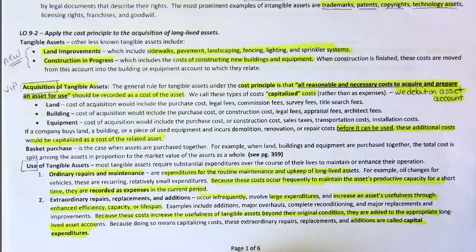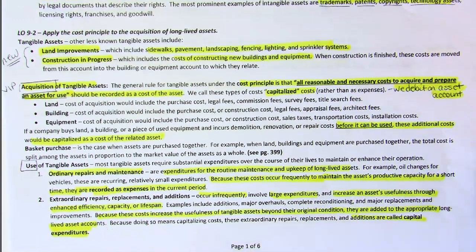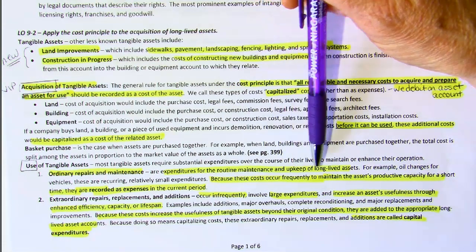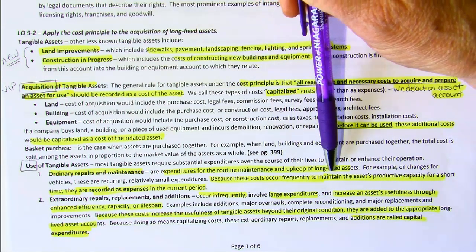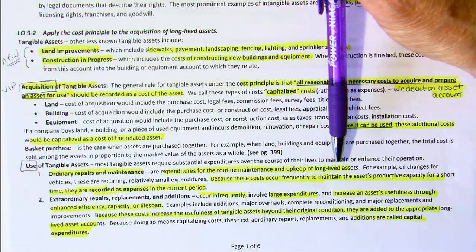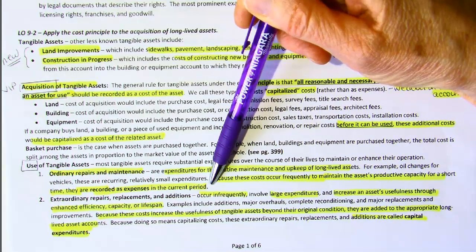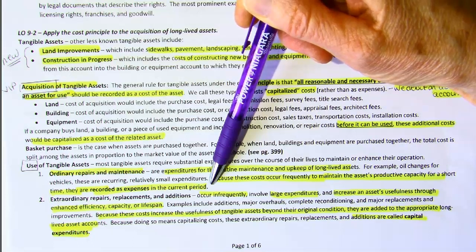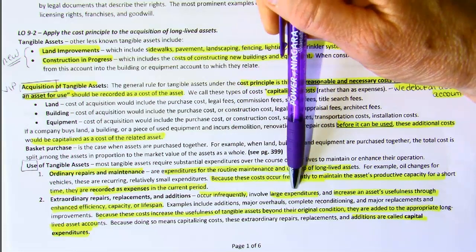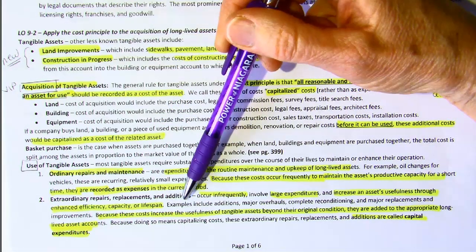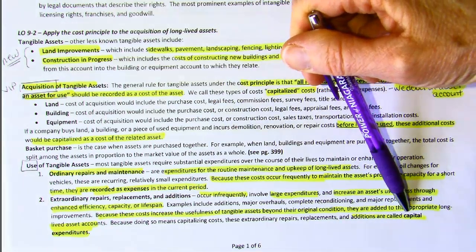What if a cost is expended after the asset is in use? Whether you debit an asset account or an expense account depends on the type of cost. If it is an ordinary repair or maintenance — routine upkeep to keep that asset in normal working condition — you should expense it because it benefits just the current period. For example, adding windshield washer fluid or filling a vehicle with gas benefits just the current period and should be expensed. However, if the cost is an infrequent, large expense that increases the asset's usefulness, it is considered an extraordinary repair, replacement, or addition and should be capitalized as a capital expenditure.